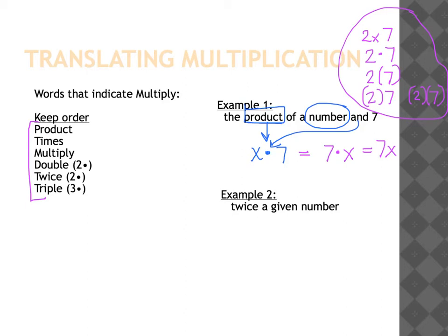Let's look at our second example: 'twice a given number.' Your key word is 'twice.' Twice indicates multiplication, but a special multiplication — it means multiply by two. If I said I have twice as much money as you, you would take how much money you have and multiply it by two. So twice means two times, and then a given number is your variable. The simplest way to write that is 2x.